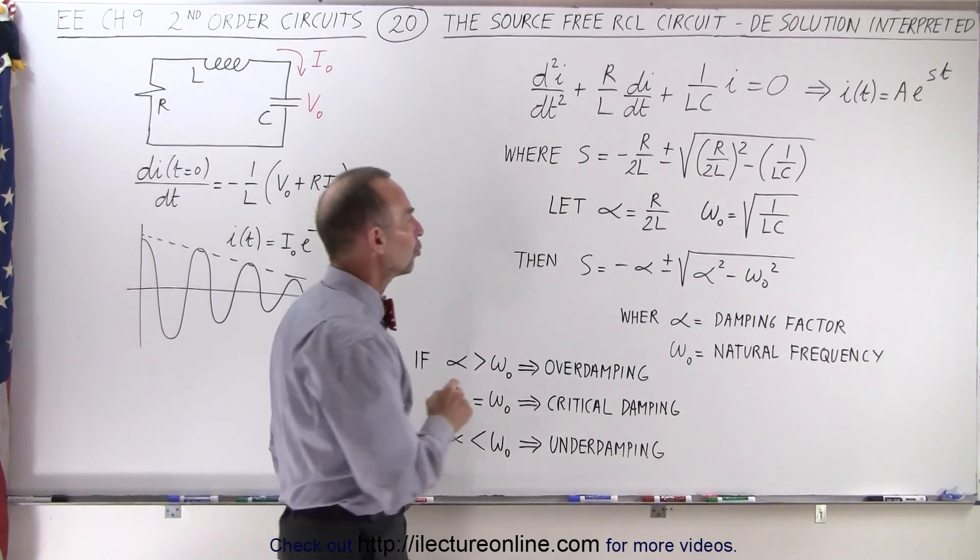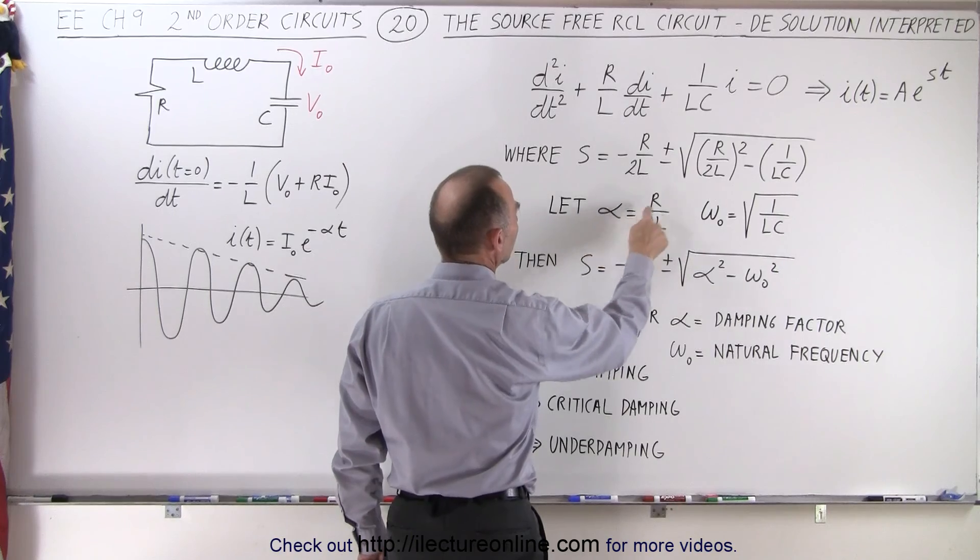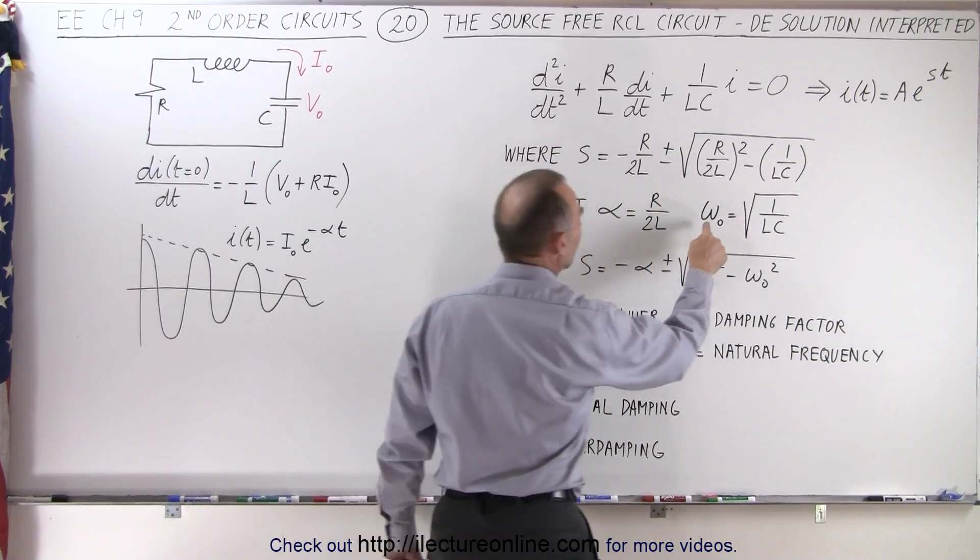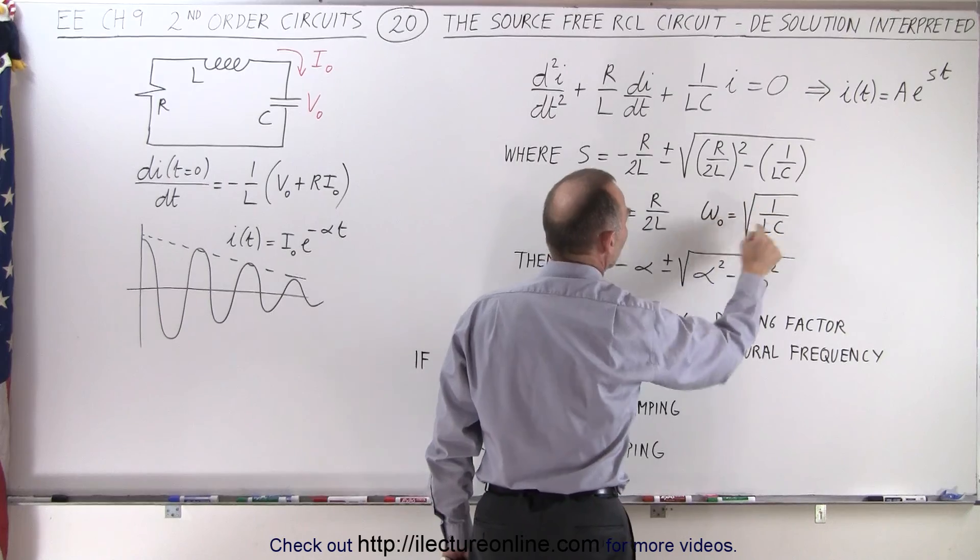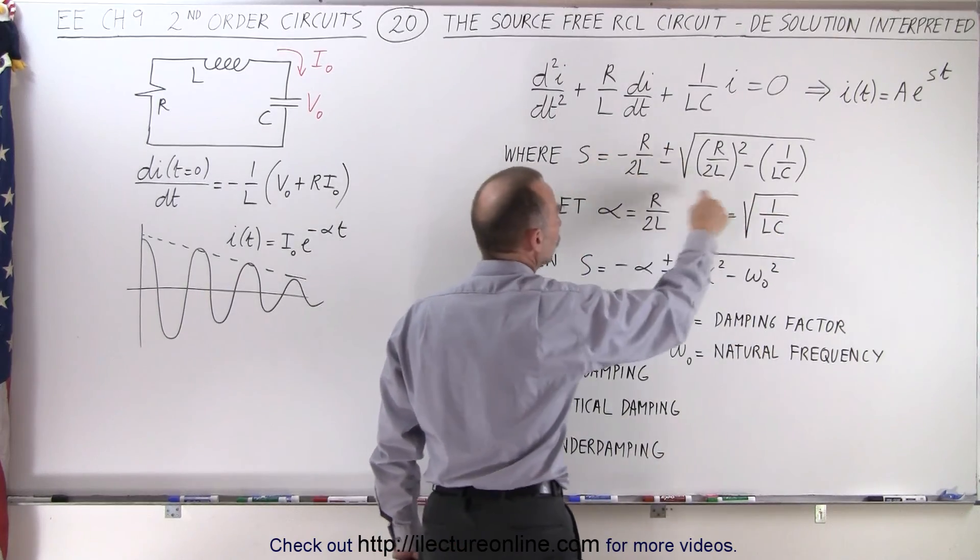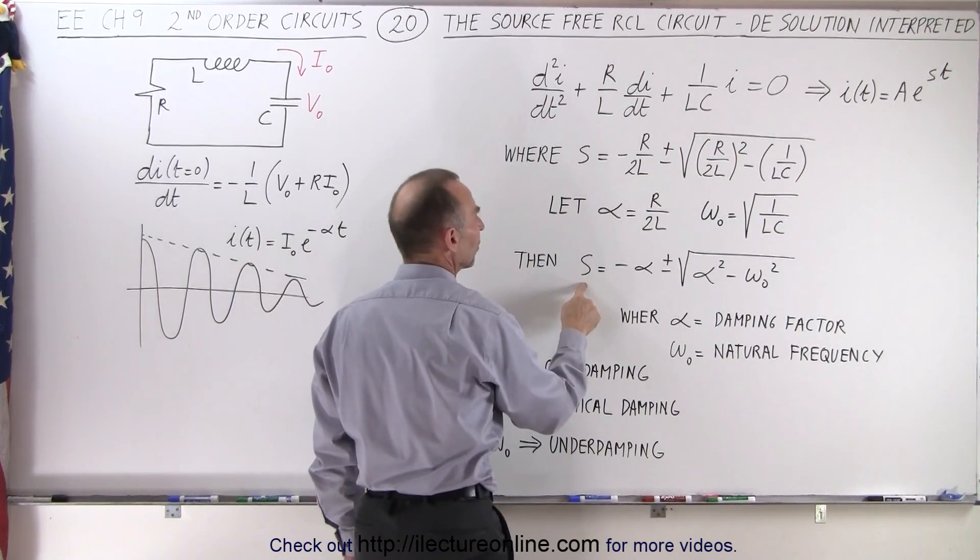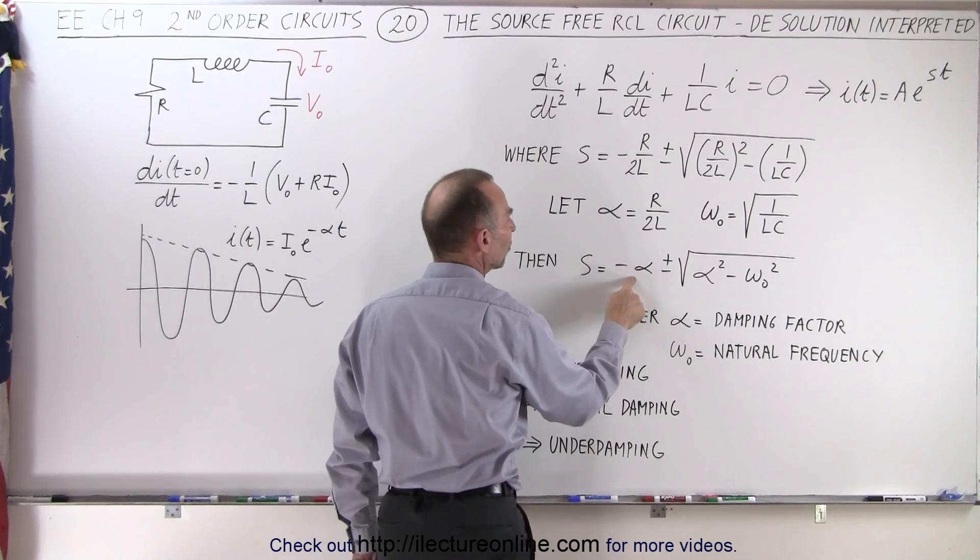If we now make the substitution where alpha is represented by R over 2L and omega sub-naught is represented by the square root of 1 over LC, then this solution to the differential equation now looks like this where s is now equal to minus alpha plus and minus the square root of alpha squared minus omega sub-naught squared.